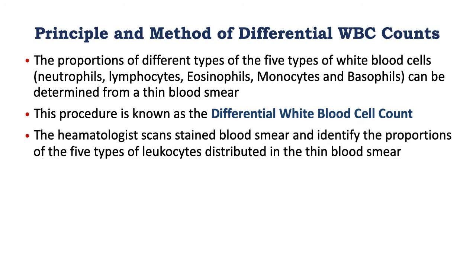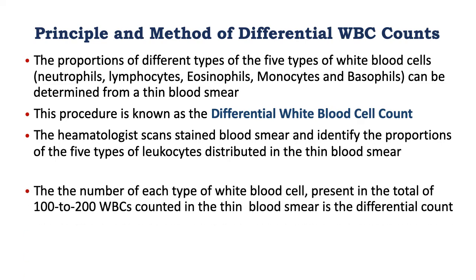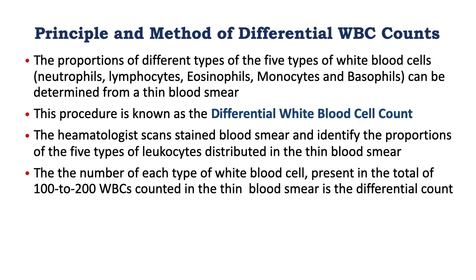A hematologist scans the stained blood smear and identifies the proportions of the five types of leukocytes distributed in the thin blood smear. The number of each type of white blood cell present in a total of 100 to 200 white blood cells counted in the thin blood smear is the differential.